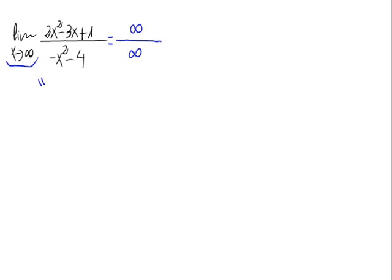For solving this indetermination, what we have to do is divide the numerator and the denominator by x with the biggest exponent in the whole fraction. As we can see, the biggest exponent is 2, so let's divide everything by x squared.